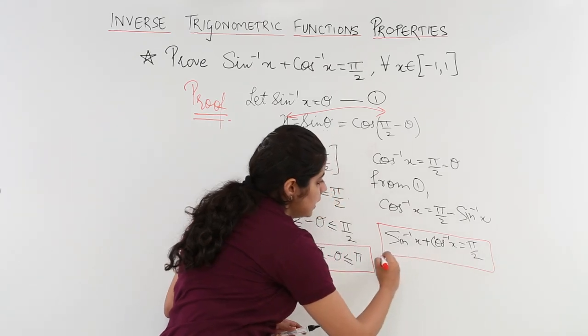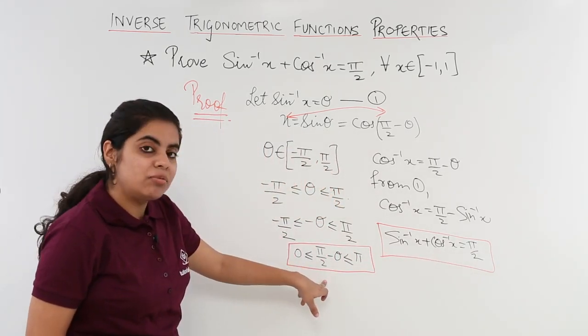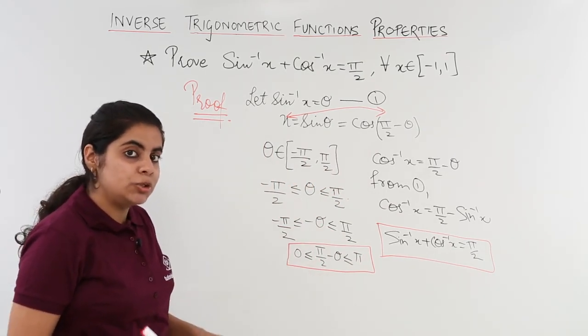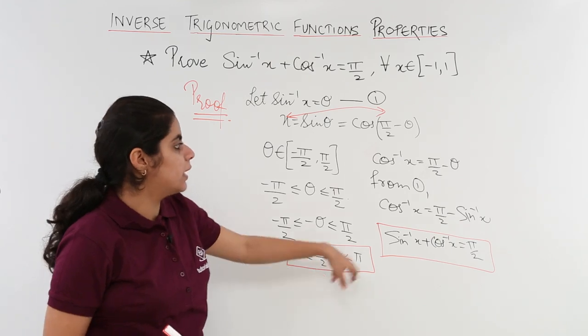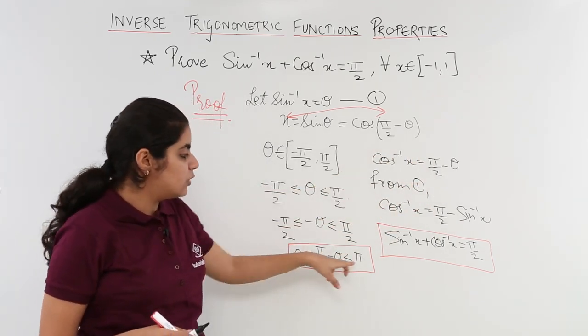That is the result and that is very much important why I found out pi by 2 minus theta because I wanted to check the pi by 2 minus theta as cos pi by 2 minus theta.